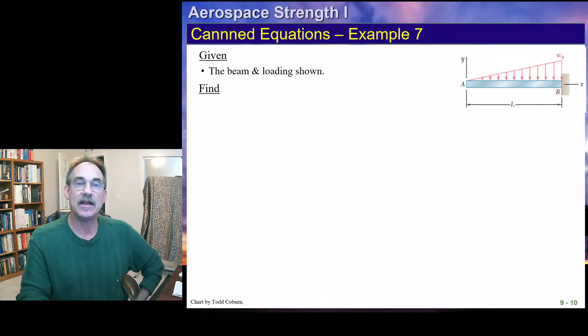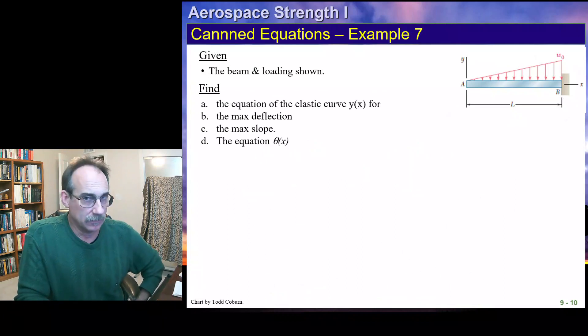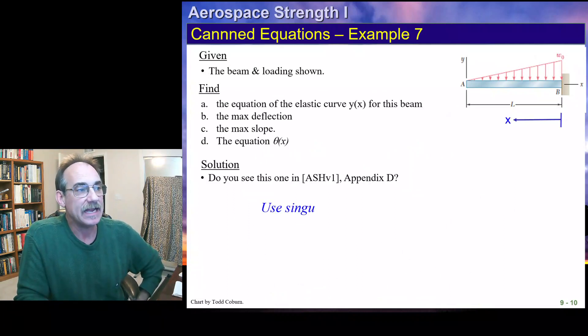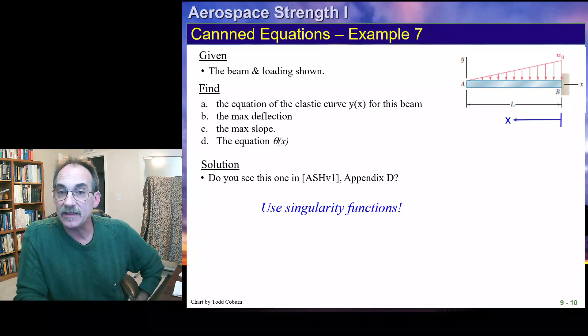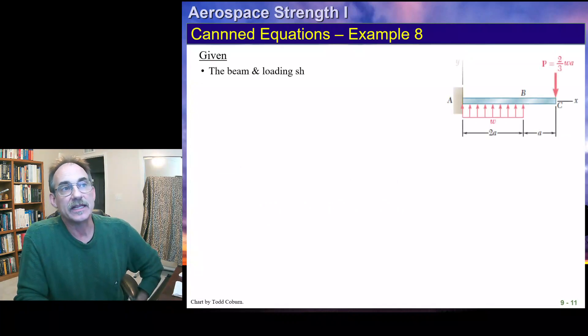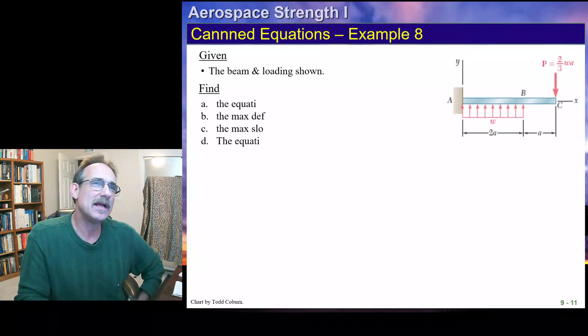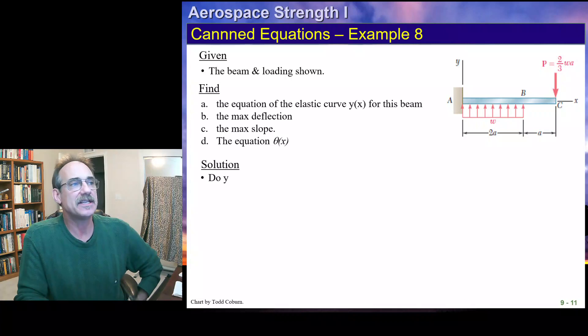If we have this little beam here, we look at our handbook and we find out that this is not in there. And so we can just use singularity functions, no problem. If we look at this one here, we also see, well, actually, this doesn't look like it's in our handbook. Hence, singularity functions will be the easiest way.